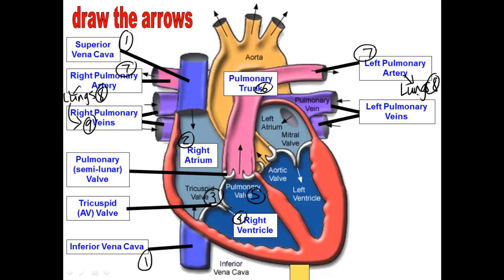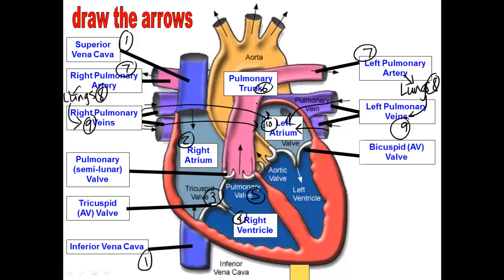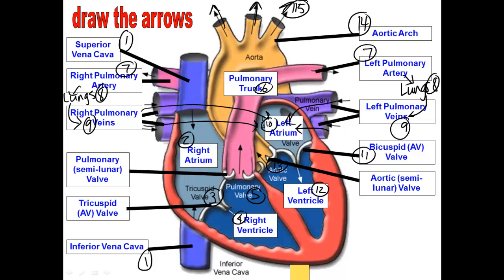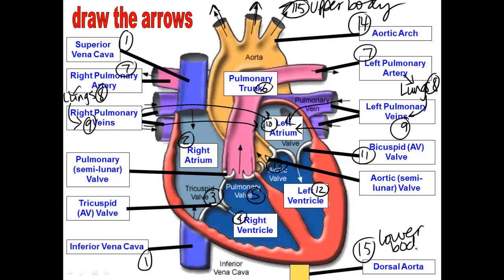Continuing the blood flow order: 9) the left and right pulmonary veins both dump into 10) the left atrium, which moves blood through 11) the bicuspid AV valve, into 12) the left ventricle, which presses blood through 13) the aortic valve, and into 14) the aortic arch. The aortic arch will pump blood either to the upper part of the body — 15a) through the carotid arteries — or down behind the heart through the dorsal aorta to the lower part of the body. Make sure you know that order.